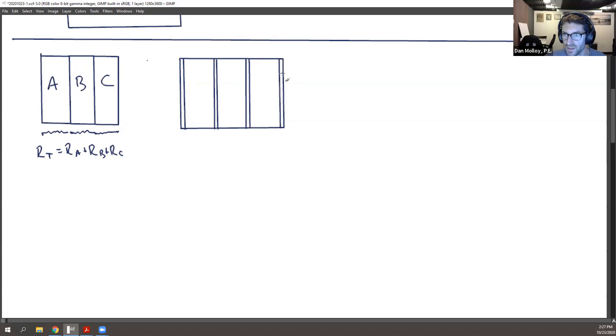And cumulatively, these studs make up 18% of the wall area. And then the insulation is the space between that makes up the balance, which is 82% of the wall area.